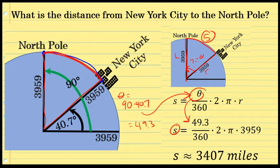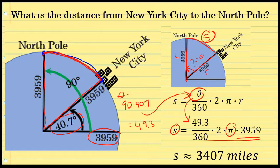Now there are a lot of approximations here. The radius of the Earth was approximated, the latitude of New York City at 40.7 degrees is approximate, and pi is an irrational number as well. So when I do this product in the arc length formula, I'm not getting the exact distance from New York City to the North Pole, but it is approximately 3,407 miles.